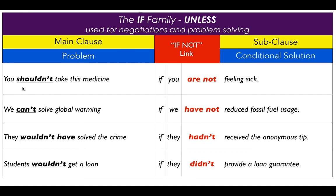Here you can see a range of negatives used in both clauses. Two examples show uncontracted forms because it's very formal — you don't have to use them. If it's a mixture, then you can do what you want. But a wide range of auxiliary and modal negatives can be used here.